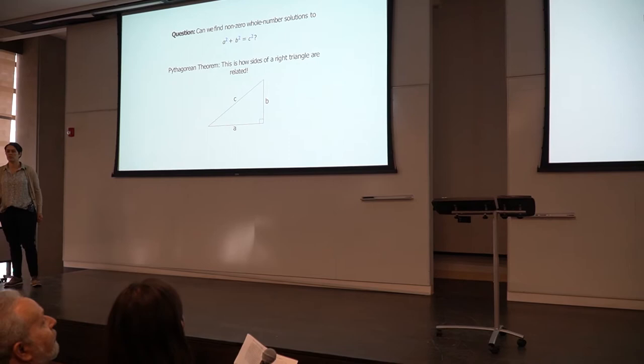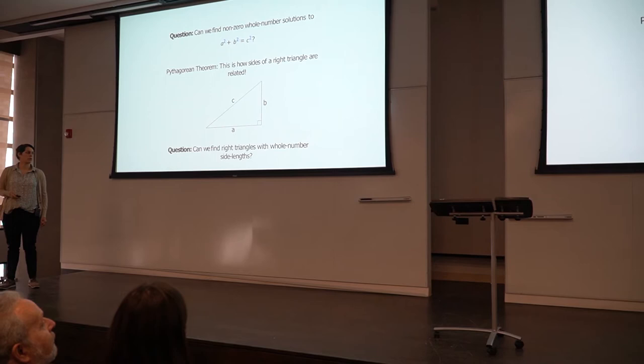Hopefully this looks a little bit familiar to you. The diagram here tells us that this is how the sides of a right triangle are related. So I can rephrase my question by asking, can we find right triangles with whole-number side lengths? And the answer to this is yes.